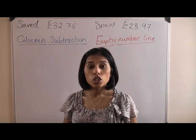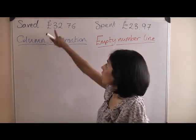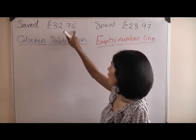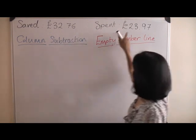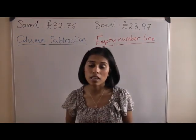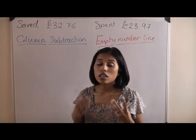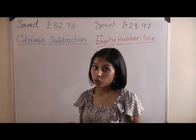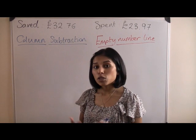So the scenario is, you've saved some pocket money, the amount is £32.76, however you've spent £23.97 of your pocket money. We are going to use the column subtraction method first to find out how much money you have left.